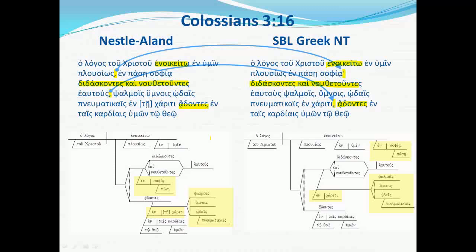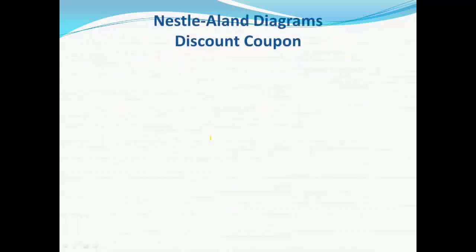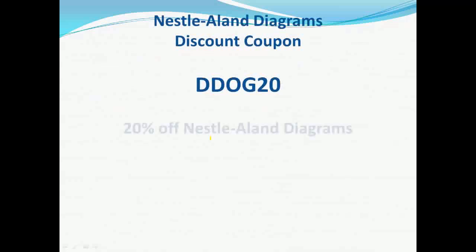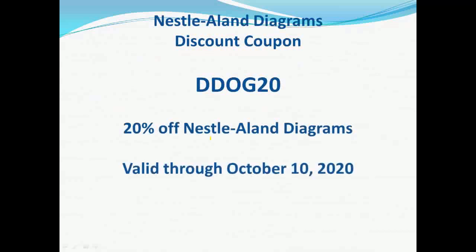I shouldn't fail to mention also that the United Bible Society's Greek text — the UBS text — is highly similar to the Nestle-Aland text, so the Nestle-Aland diagrams should also serve readers of that text well. A moment ago I mentioned coupons: DDOG20 will get you a 20% discount on the Nestle-Aland diagrams through October 10, 2020. But whichever set you may buy, if you buy any at all, I pray that they will serve you well in support of your labors in the Word.